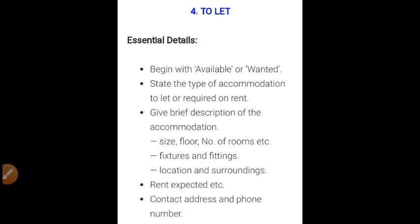The next category is 'To Let,' meaning for rent. You can also write the heading as 'For Rent.' Begin with 'Available' or 'Wanted,' then state the type of accommodation to let or required on rent. Give a brief description of the accommodation — size of the room, which floor (first or second), number of rooms, fixtures and fittings (whether pre-fitted or the new occupant needs to arrange them), location and surroundings. At last, rent expected along with contact address and phone number.